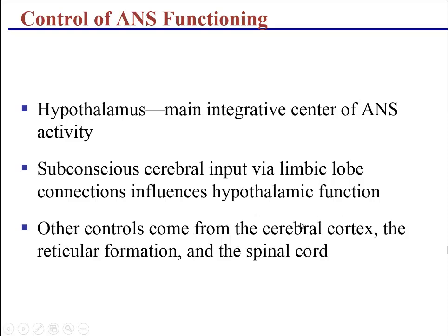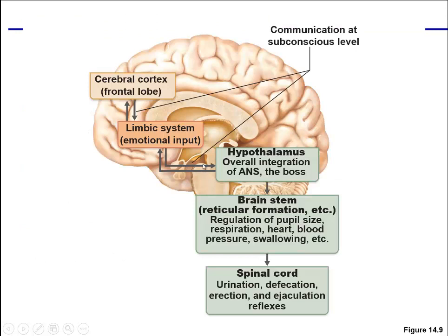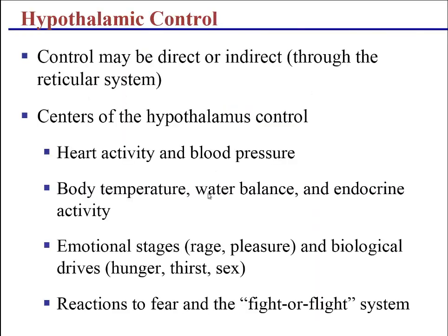The hypothalamus integrates the entire autonomic response and sits directly below the thalamus. Our overall response can be both physical and emotional, triggering physical responses such as fight-or-flight. The hypothalamus controls blood pressure, heart rate, body temperature, fluid and salt balance, most hormonal activity, emotional states — whether we're happy, sad, or angry — and our drives: hunger, thirst, sex drive, and how we respond to fear, including triggering the fight-or-flight response when needed.